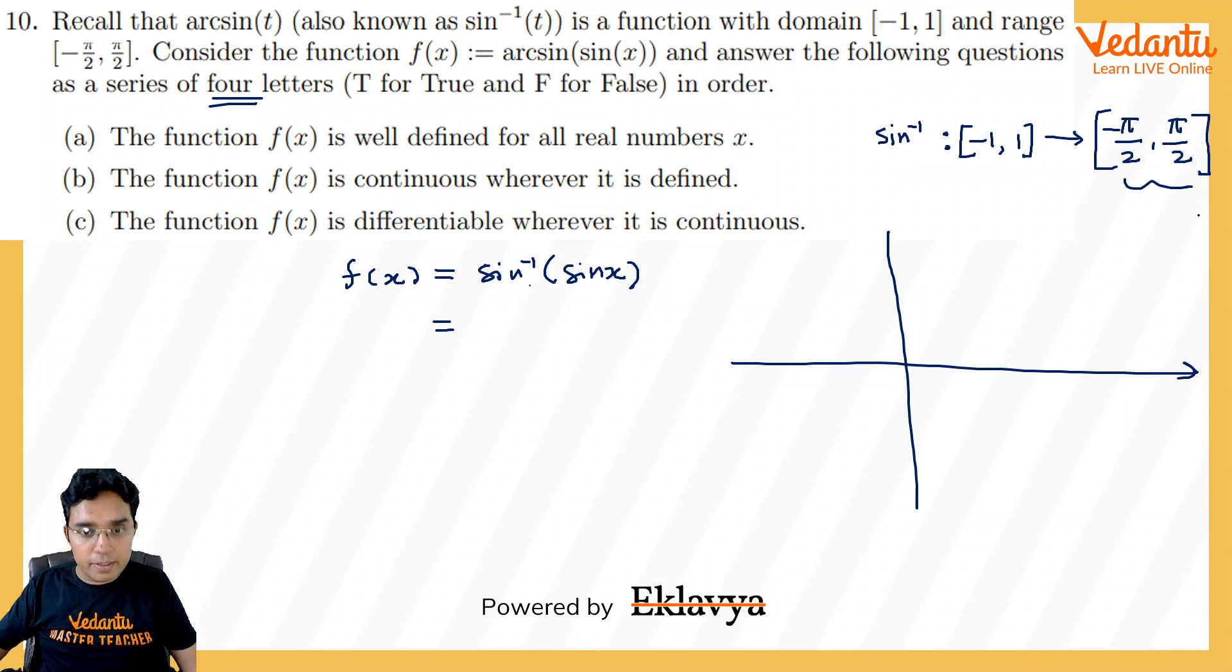This graph is like x only. From -π/2 to π/2, it's a linear graph. And after this, it goes like this zigzag. This is the graph of sin⁻¹(sin(x)).